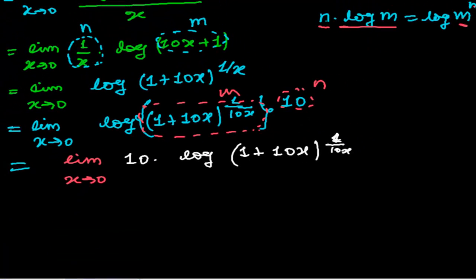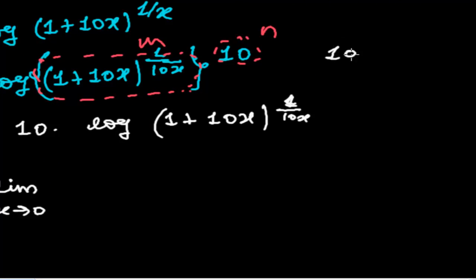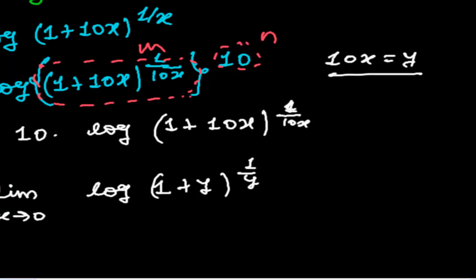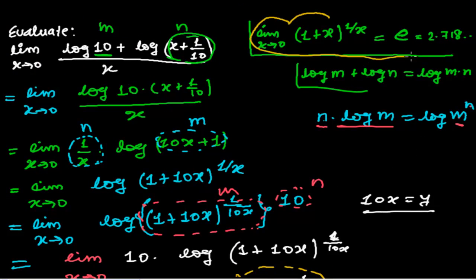So now we can easily use the formula. Now I'm taking this 10, it's a constant, so I'm taking it outside. Limit x tends to 0, and to make it easier, I'm supposing 10x as y. So it will be now log 1 plus y whole to the power 1 upon y. Now there is no difference between this expression and this expression. This whole expression, 1 plus x to the power 1 upon x equals to e, the Euler constant.